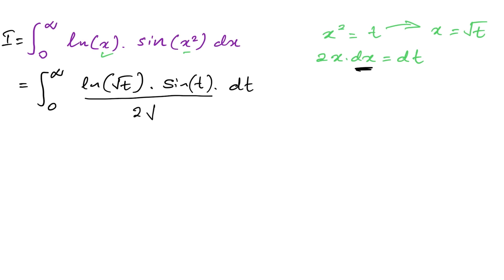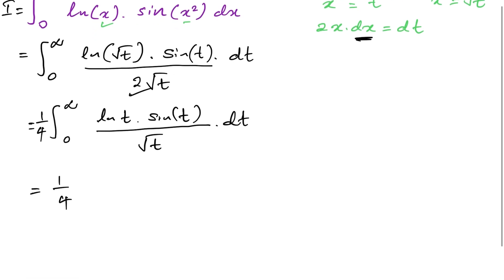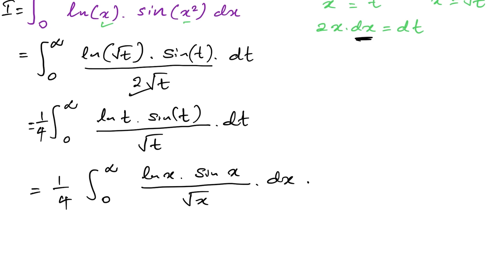In the numerator we have natural log of the square root of t, which is natural log of t to the one half, so we bring the one half in front of the log. Combined with the 2 in the denominator, we get a factor of 1/4 outside the integral. Renaming the variable back to x, we have (1/4) times the integral from 0 to infinity of natural log of x times sine of x over the square root of x dx.